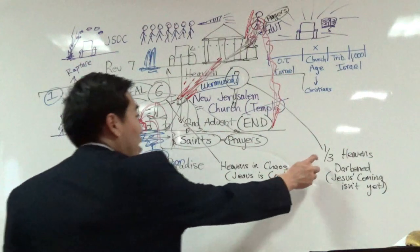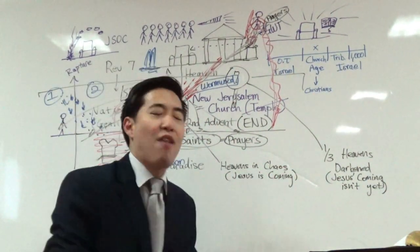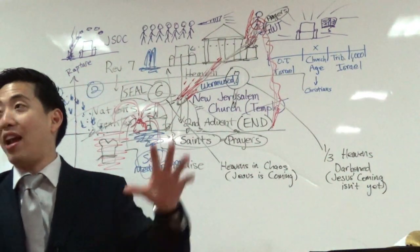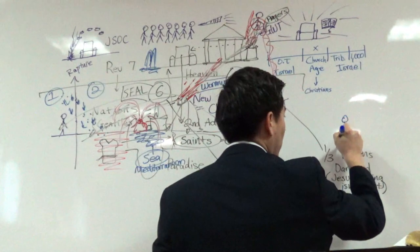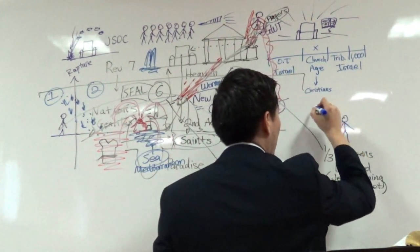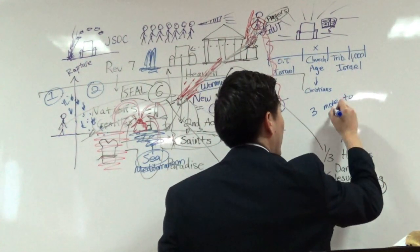We're at the fourth trumpet here. When we come to this heavens darkened, what's going on is that while the heavens are darkened, everyone is like saying, where's light? Everything is dark. All of a sudden, a boom comes out of heaven from the angel. And he says to them, three more to come. As if that wasn't scary enough.